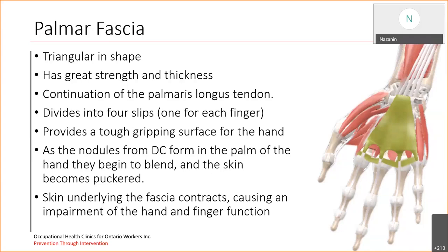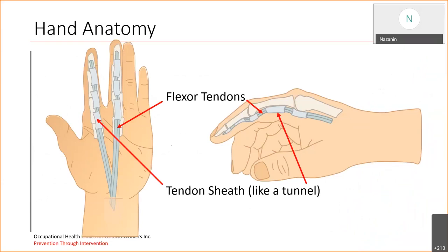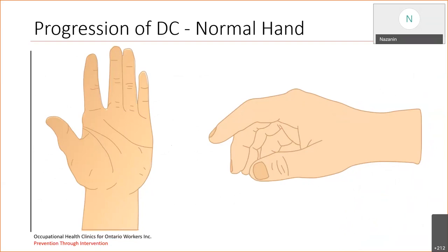it begins to blend and the skin becomes really puckered. The underlying skin of the fascia starts to contract and causes an impairment of hand and finger function. These are the flexor tendons on the skin — the tendons I just talked about — and they are cushioned or protected in terms of functionality by tendon sheaths, which are like a tunnel in this picture.